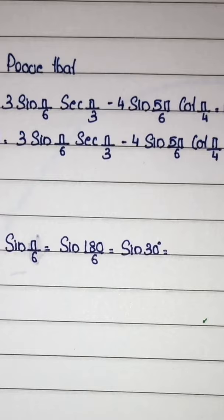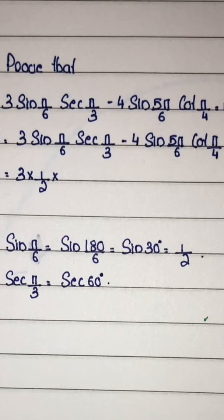sec π by 3, 180 by 3, 60 degree. We know that cos 60 is 1 by 2, so sec 60, that is reciprocal, 2.